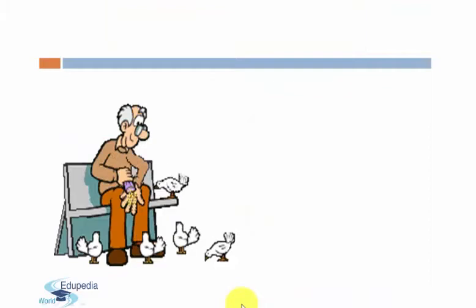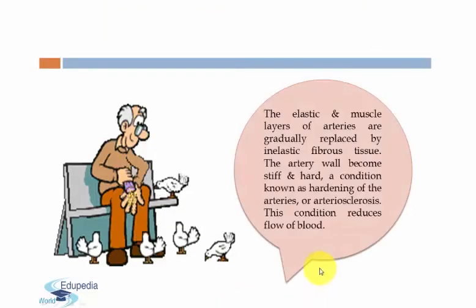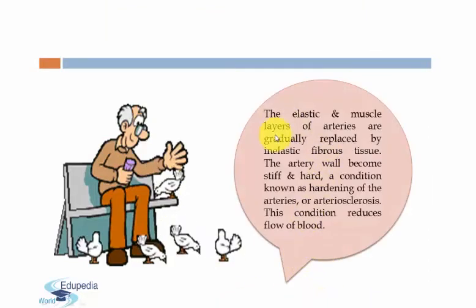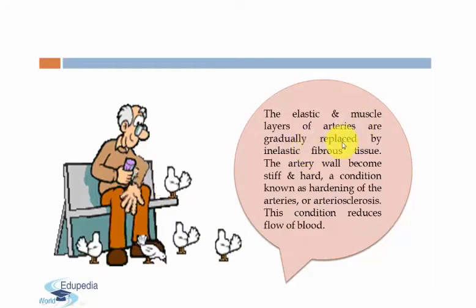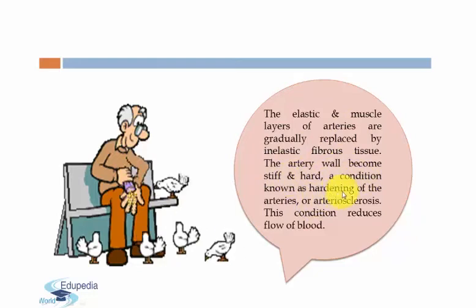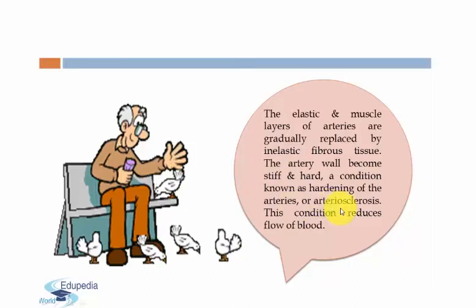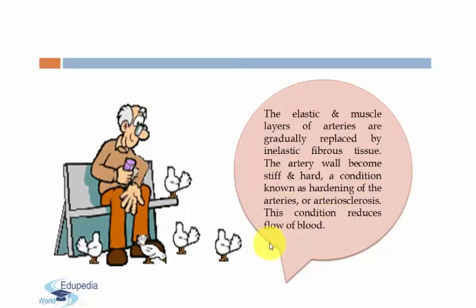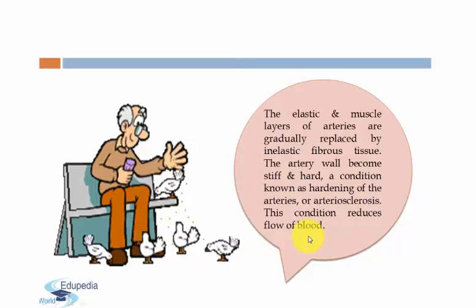As people get older, the elastic and muscle layers of arteries are gradually replaced by inelastic fibrous tissue. The artery wall becomes stiff and hard, a condition known as hardening of arteries, or arteriosclerosis. This condition reduces the flow of blood.